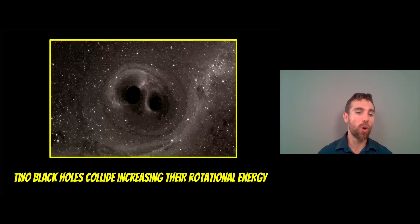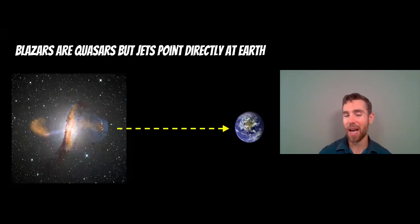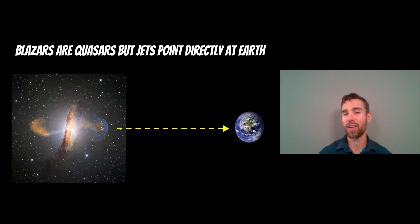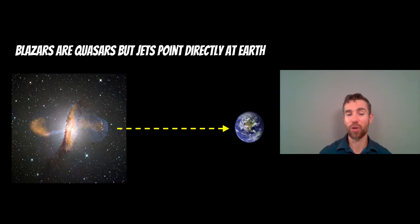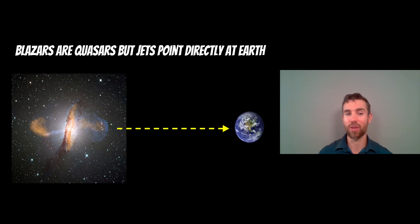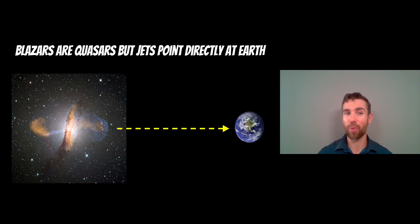It's also worth noting blazars. Blazars are basically the same as a quasar, but they are orientated so that those powerful jets are pointed directly towards Earth. When we look at them, they appear more energetic than a quasar because we're getting a direct line of sight to the jet, whereas a quasar is slightly angled so the jets are not directly pointed at Earth. That is the main difference between blazars and quasars — they're essentially the same object, just orientated slightly differently.